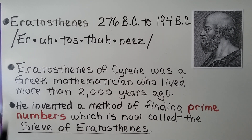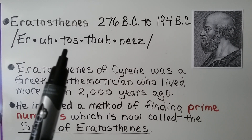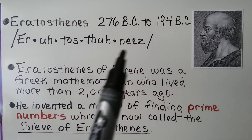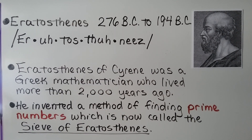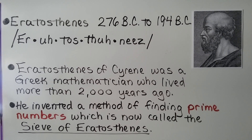Eratosthenes — pronounced er-a-tos-thenes — lived from 276 B.C. to 194 B.C. He was a Greek mathematician who lived more than 2,000 years ago, and he invented a method of finding prime numbers which is now called the sieve of Eratosthenes.